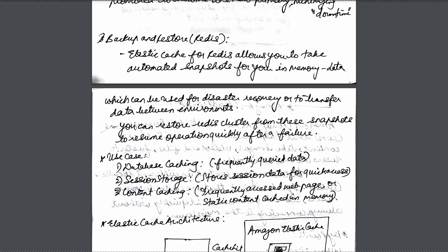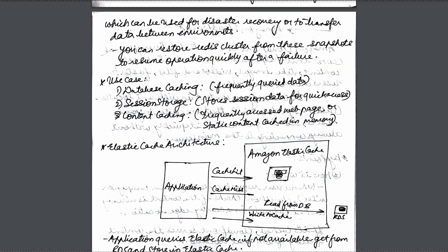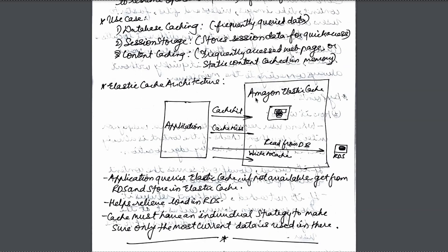The use cases for ElastiCache include: first, database caching — you can cache frequently accessed data; second, session storage — for quick access to session data; and third, content caching — frequently accessed static content or any sort of data can be cached directly using ElastiCache.